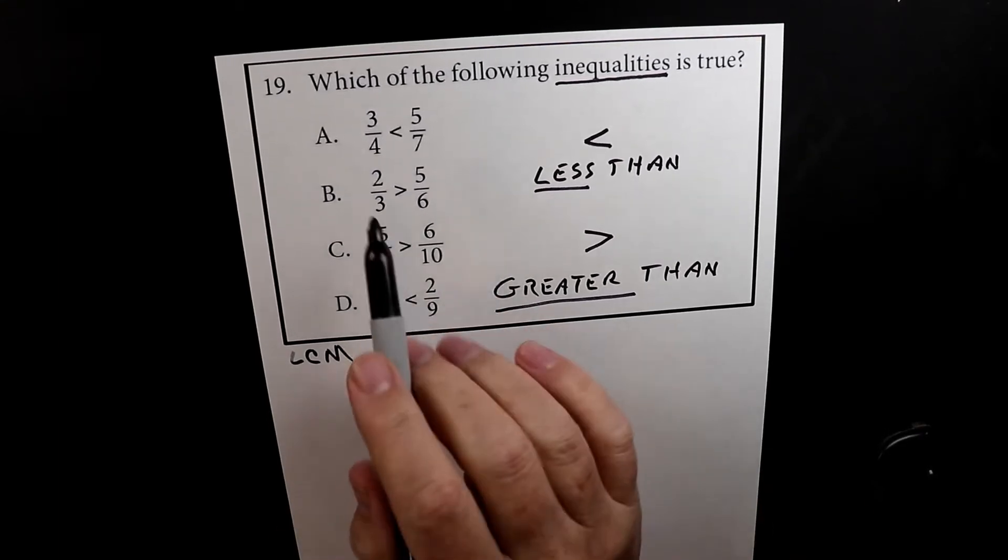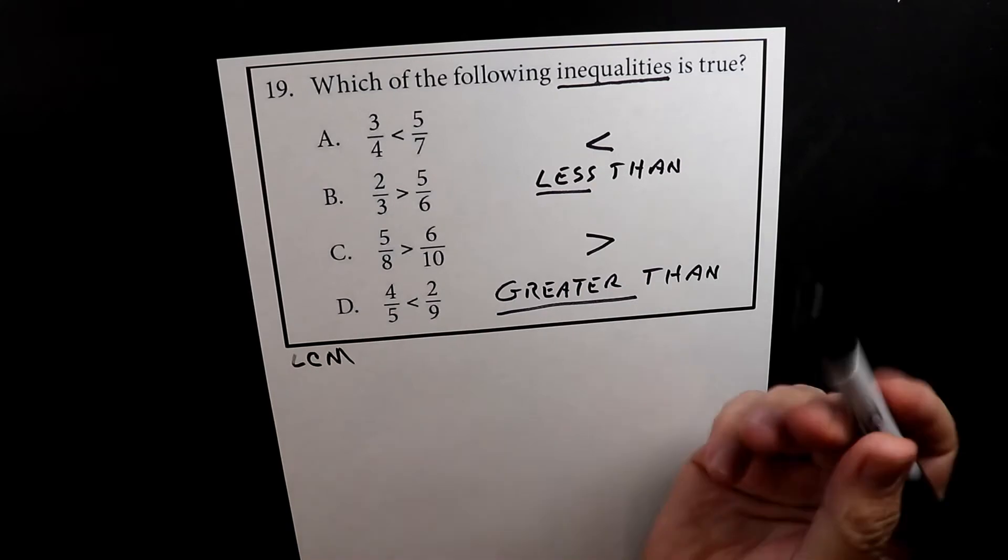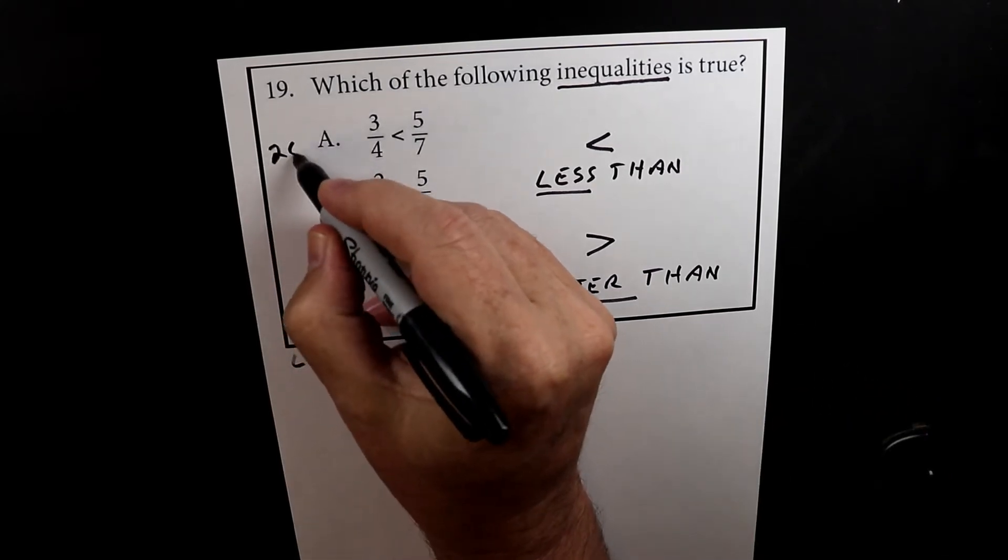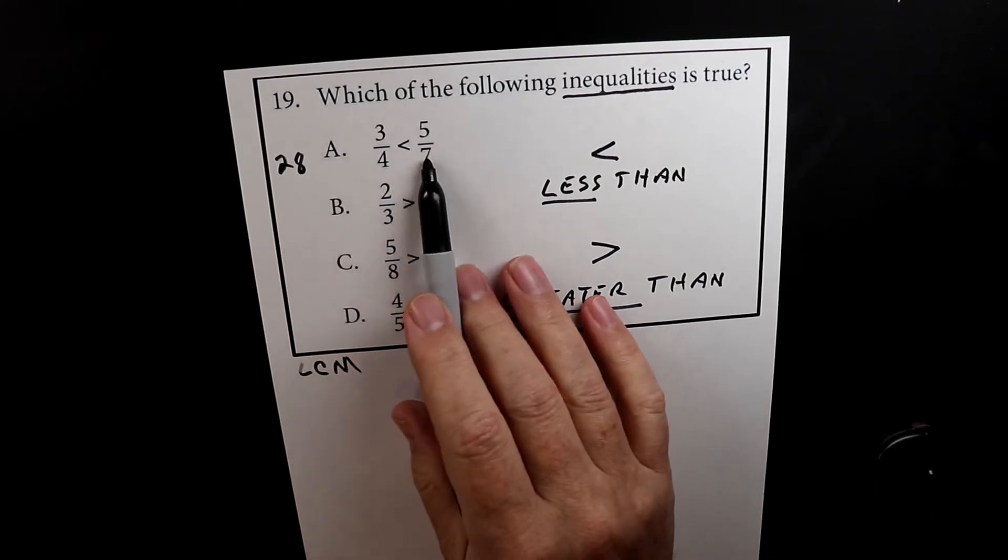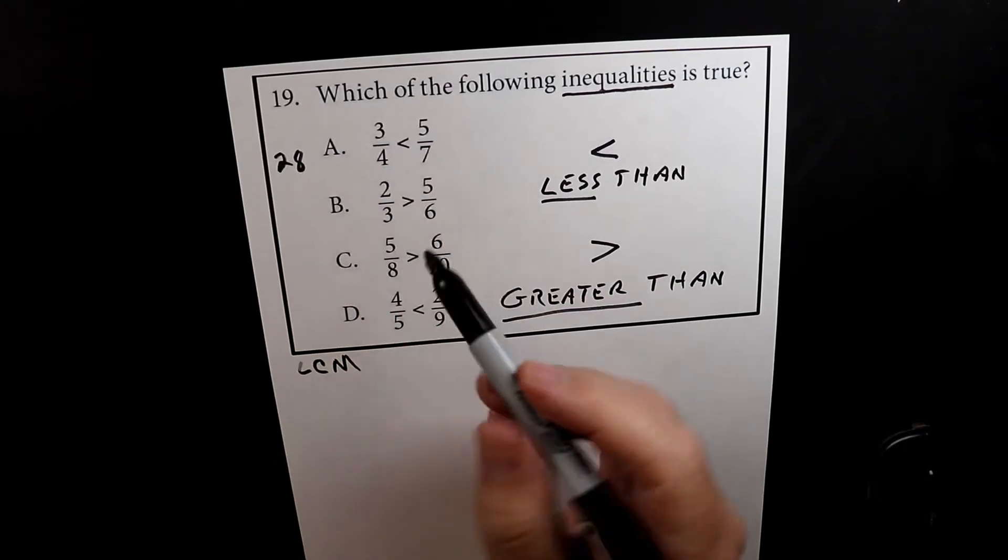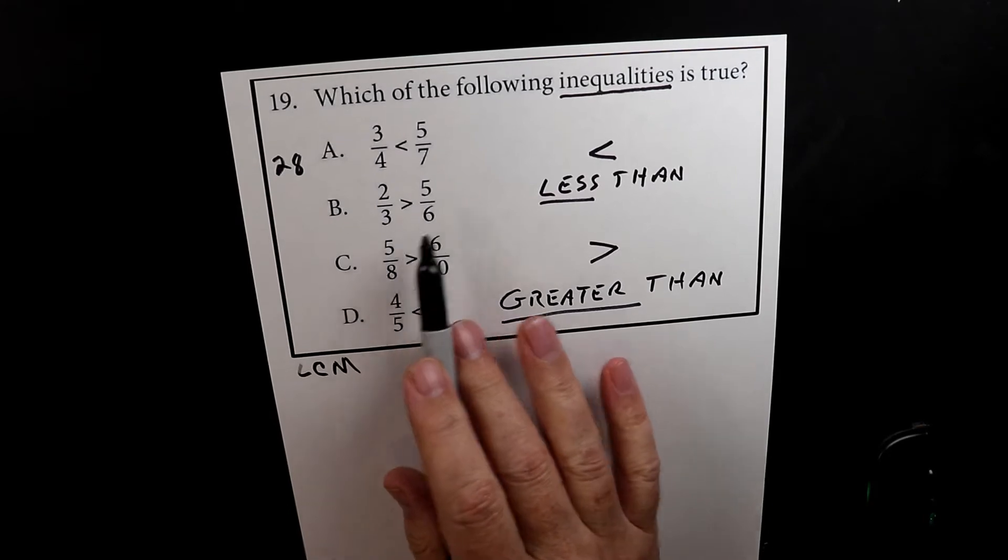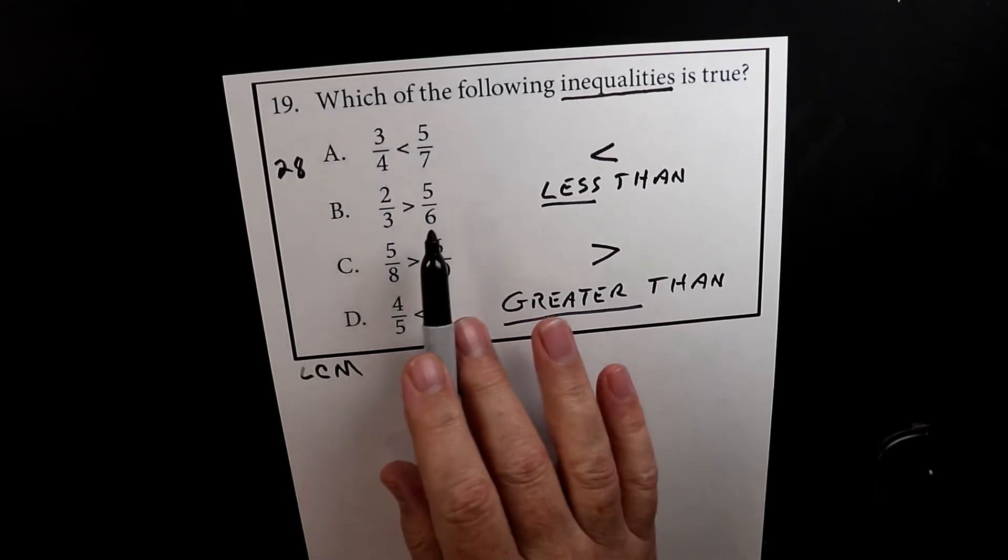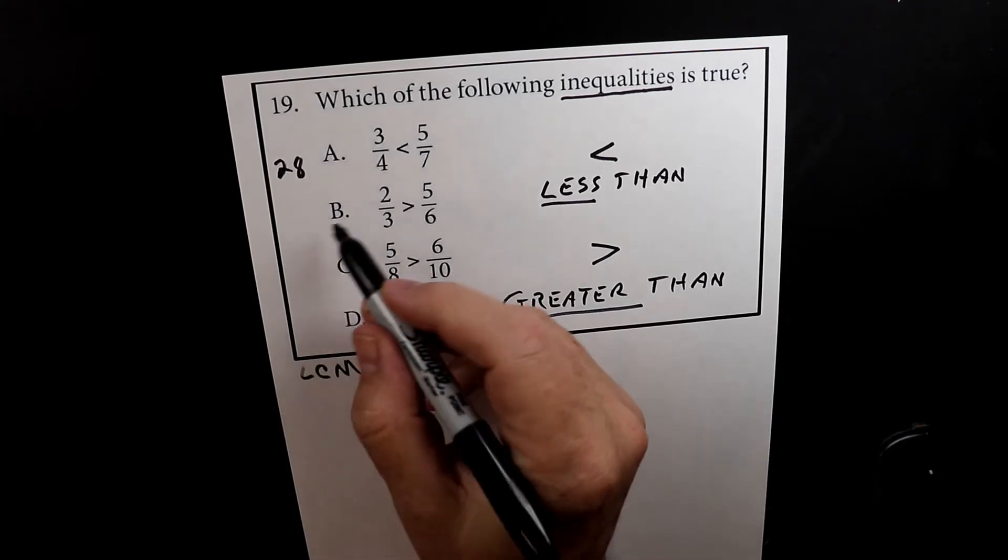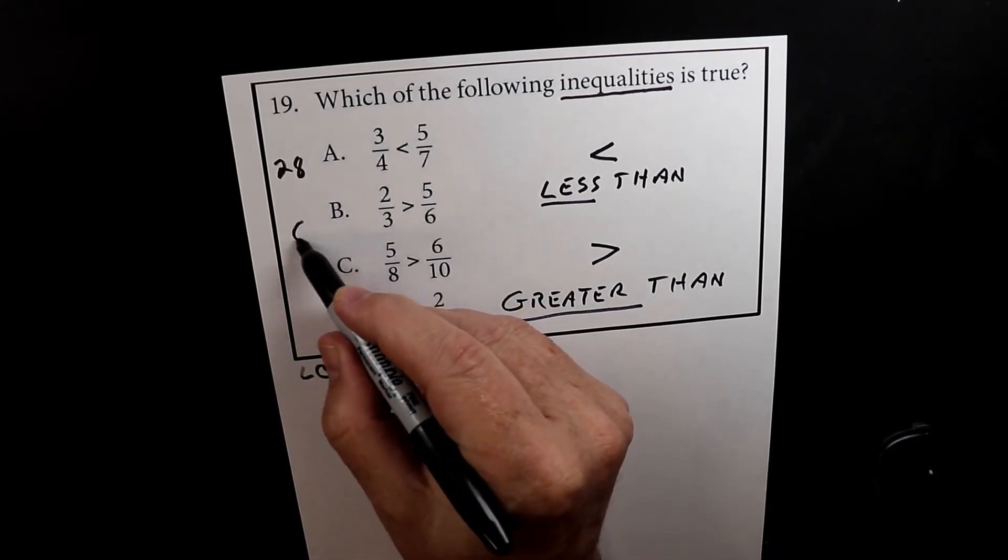So the least common multiple for these two numbers is 28. 7 times 4 is 28, and 7 times 4 is 28. For here we have 3 and 6, and 3 is a multiple of 6. So the LCM for here, the least common multiple is 6.